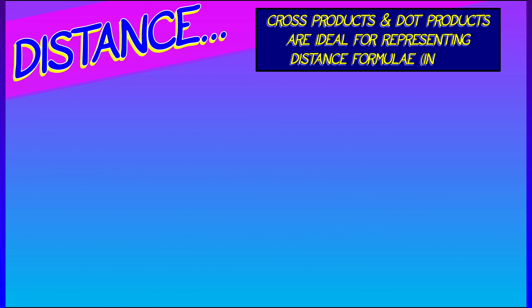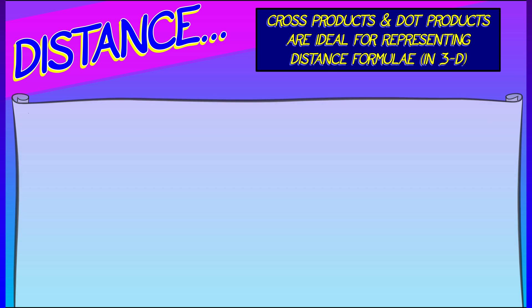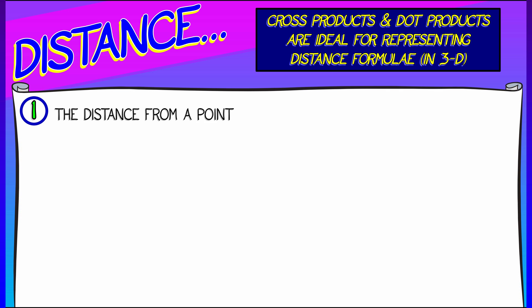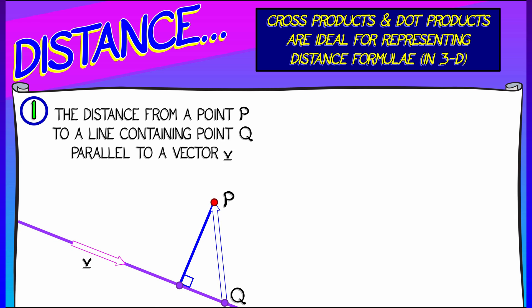The cross product and the dot product are great for representing some classical distance formulae in 3D. We looked at a simple example earlier, the distance from a point p to a line. Let's say that line is expressed in terms of a point q on that line, and the line is parallel to some vector v.